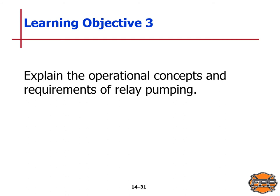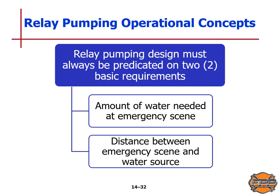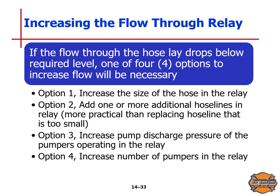Learning Objective 3: we will explain the operational concepts and requirements of relay pumping. Relay pumping design must always be predicated on two basic requirements — first, the amount of water needed at the emergency scene, and second, the distance between the emergency scene and the water source. If the flow through the hose lay drops below the required level, the flow will need to be increased. There are four options: one, increase the size of the hose in the relay; two, add one or more additional hose lines in the relay; three, increase pump discharge pressure of the pumpers operating in the relay; and four, increase the number of pumpers in the relay.